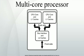The terms multicore and dual-core most commonly refer to some sort of central processing unit, but are sometimes also applied to digital signal processors and system-on-a-chip. The terms are generally used only to refer to multicore microprocessors that are manufactured on the same integrated circuit die. Separate microprocessor dies in the same package are generally referred to by another name, such as multi-chip module.